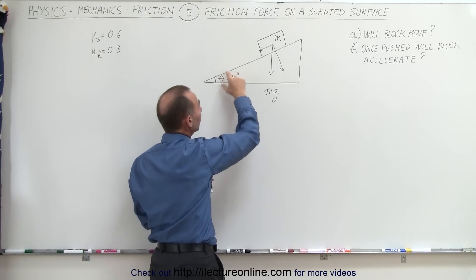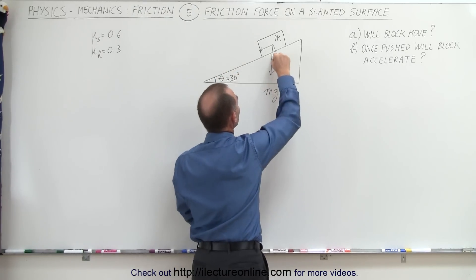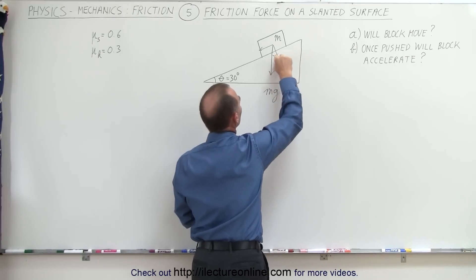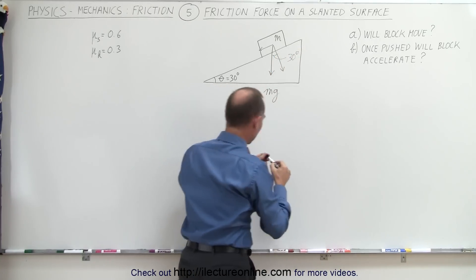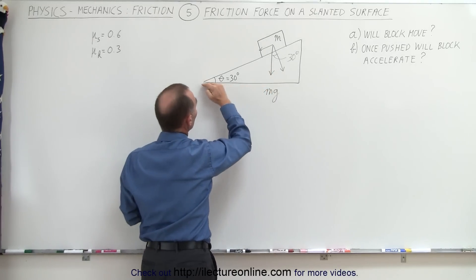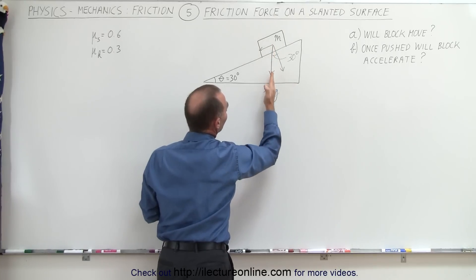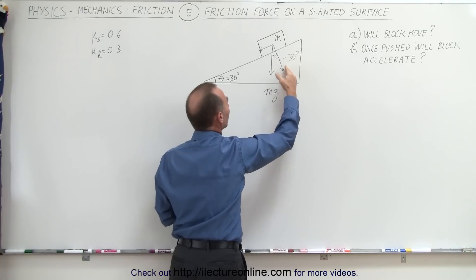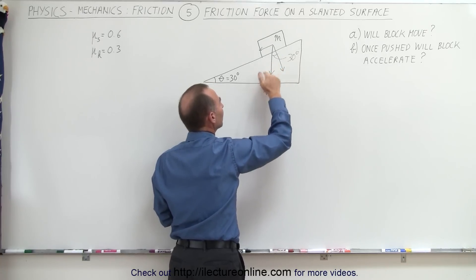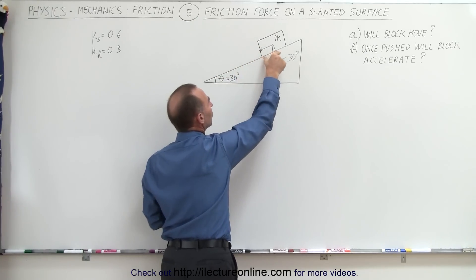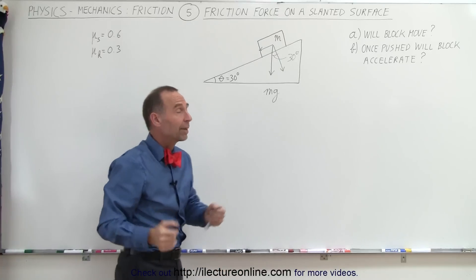This angle theta of 30 degrees is the same as the angle in the component triangle. The reason we know those two angles are the same is that this line is perpendicular to this line, and this line is perpendicular to this line. Therefore, if one pair of lines is mutually perpendicular to another pair, the angle between those two sets of lines must be equal. That makes sense.